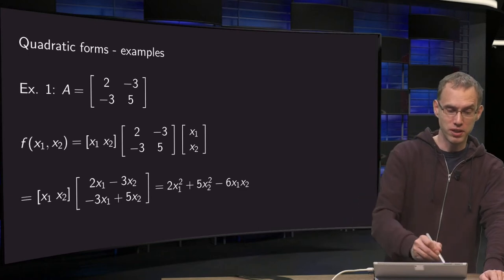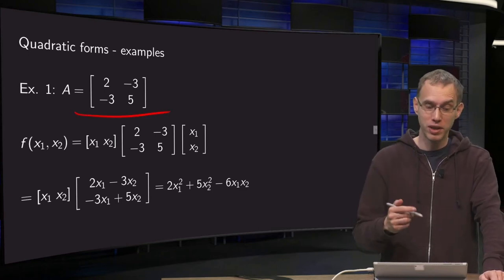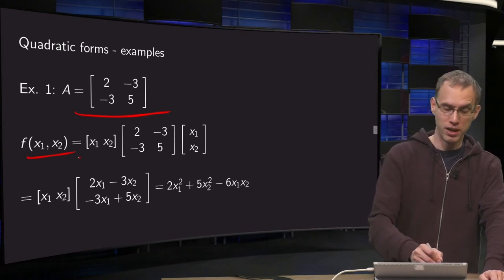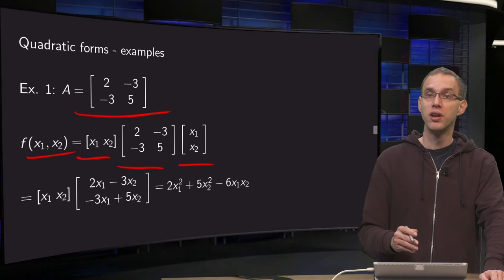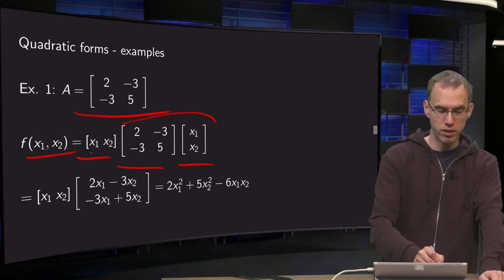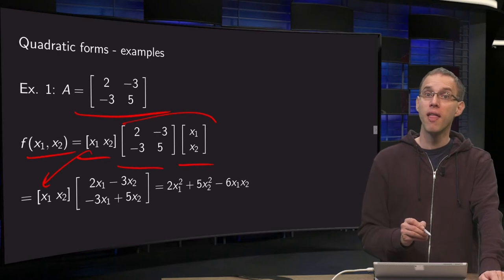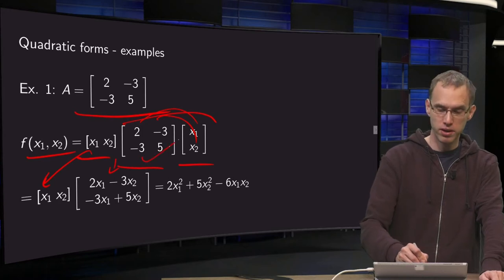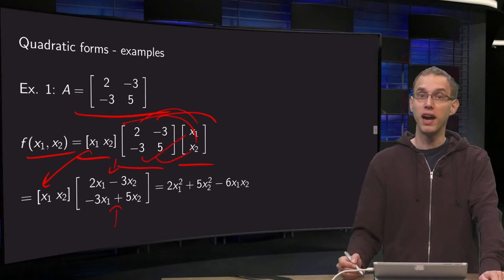Let's start with some symmetric matrix A and try to find the quadratic form f of x1 and x2. We compute x transpose times A times x. Let's do this part first, so we copy the x1 and x2 over there. Use the row column rule, so 2x1 minus 3x2 goes in the first component, minus 3x1 plus 5x2 goes in the second component.